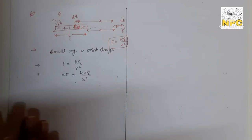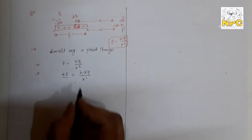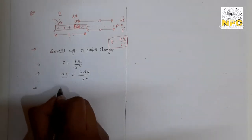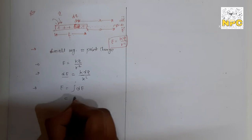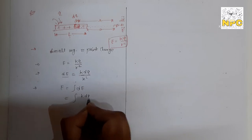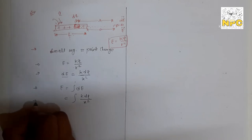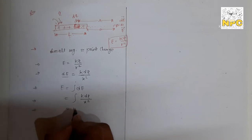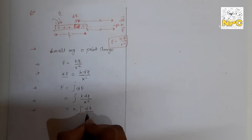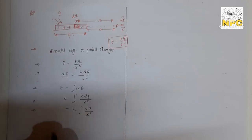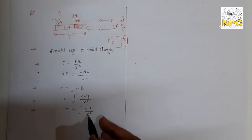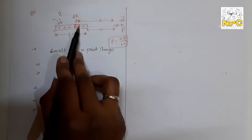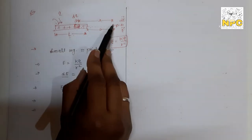If we find the small electric fields dE from each small segment and take their vector sum, we get the total electric field. For the total sum, we use integration - integration means summing all contributions over the given points. So total E = ∫dE = ∫k·dq/x², where k comes out as a constant: E = k∫dq/x².